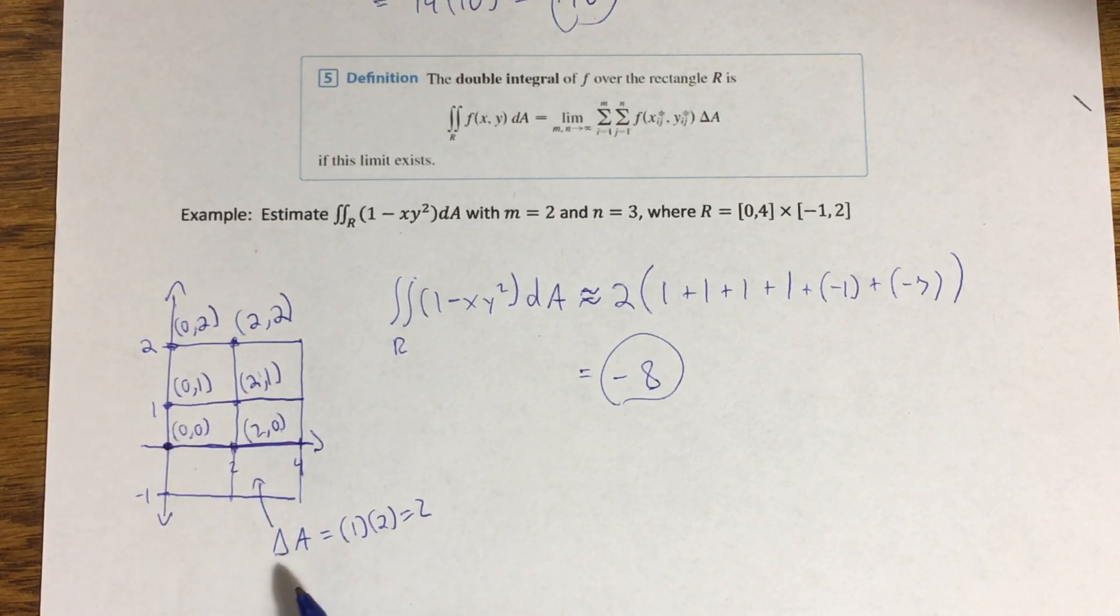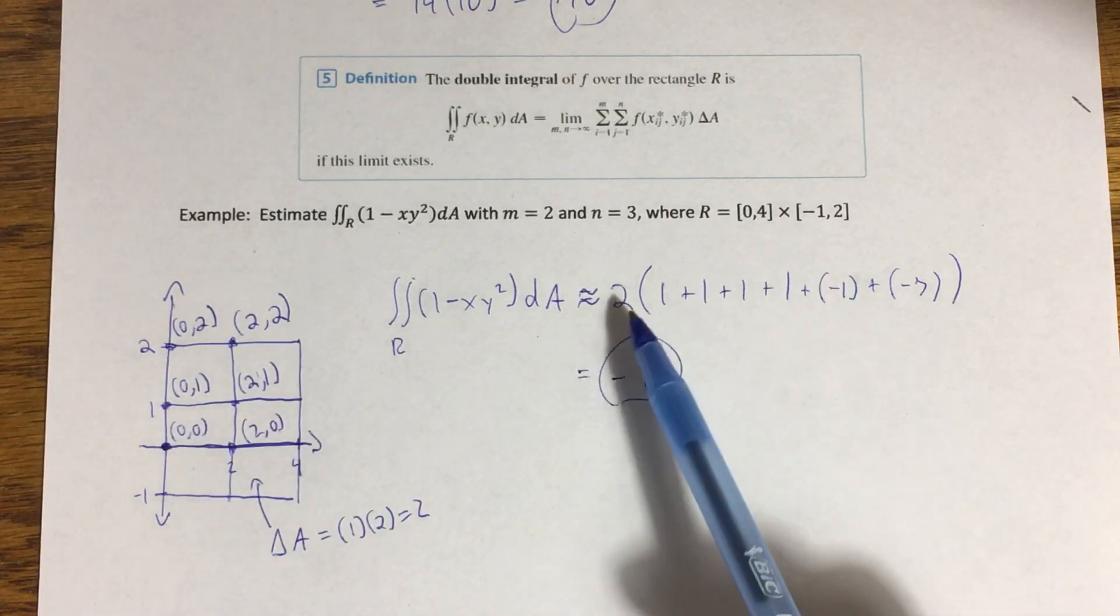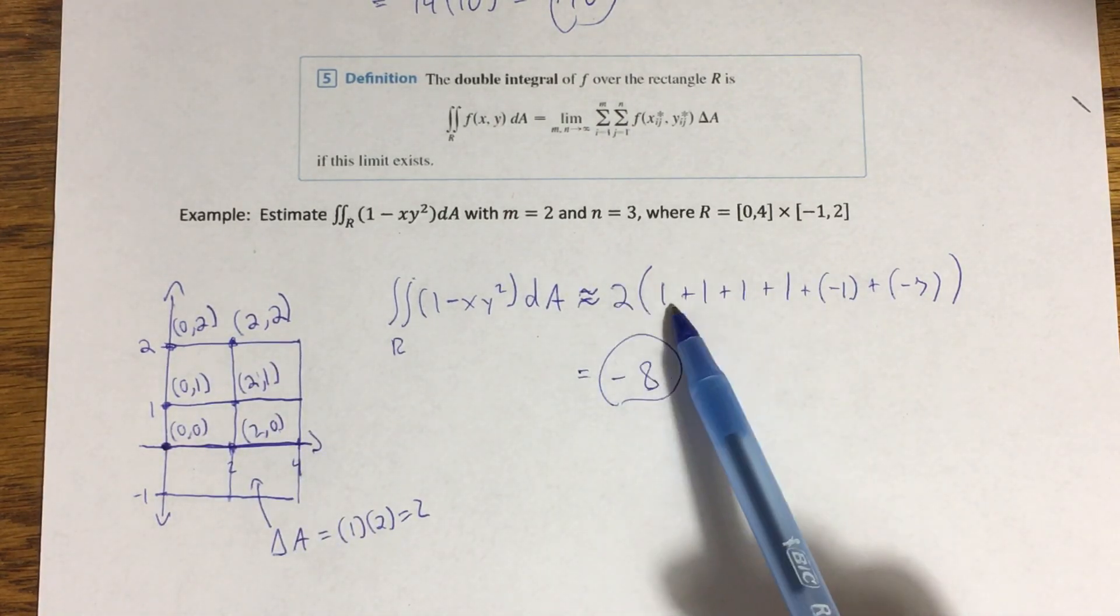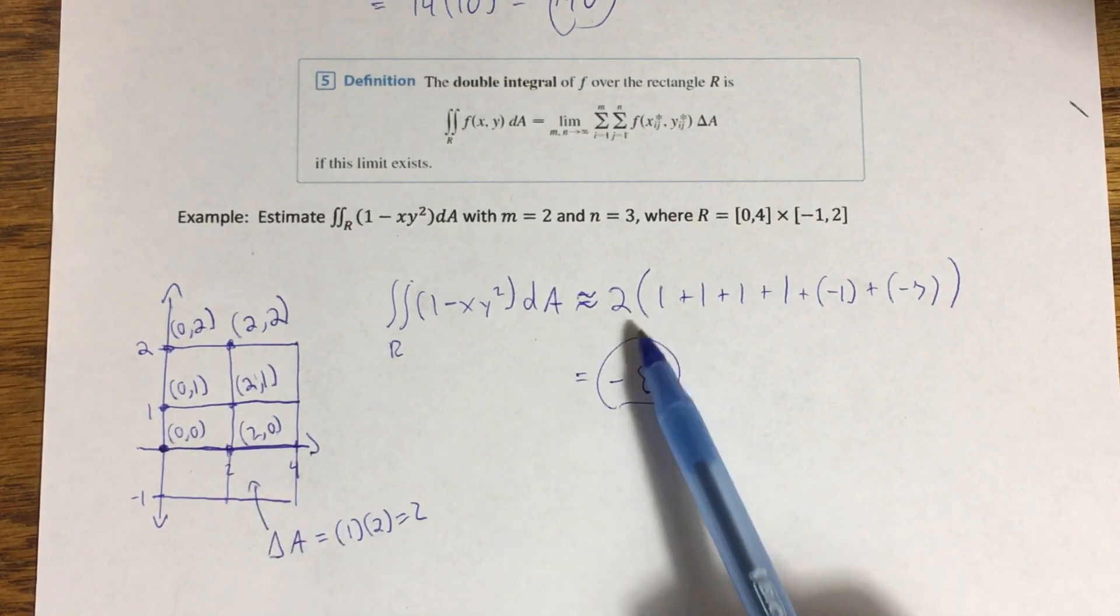The area of each one of these little sub-rectangles, which we're calling delta A, is two. It's, if you look at the dimension, it's two times one for each of those rectangles, so they each have the same area of two. That means rather than doing the area times the height a total of six times, I can just factor the area out, add the heights up, and then multiply the whole thing by that common area delta A, which in this case is two.